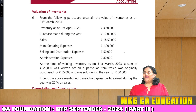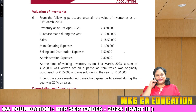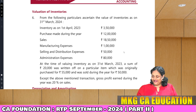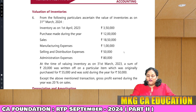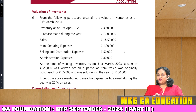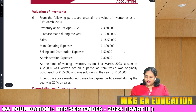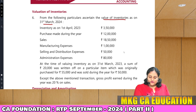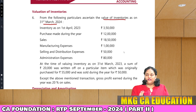Good morning everyone. Let's continue with RTP, question number 6. From the following particulars, ascertain the value of inventory as on 31st March 2024. So we have to calculate closing stock as on 31st March.